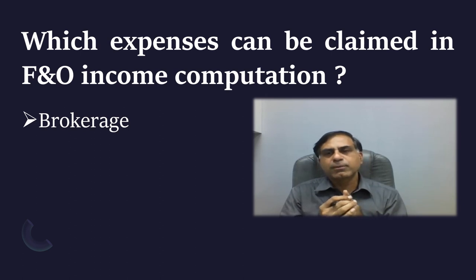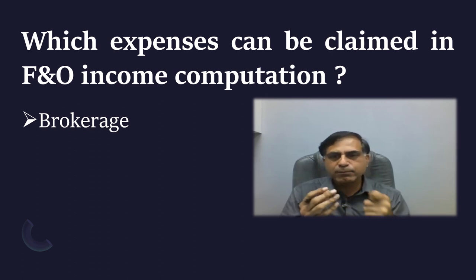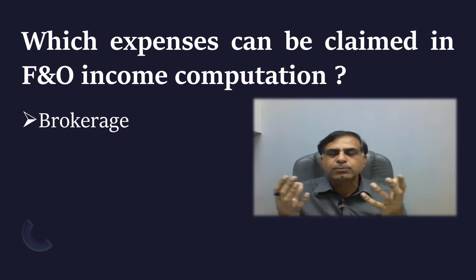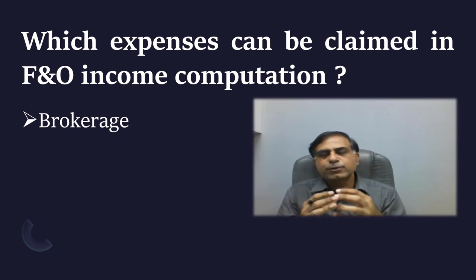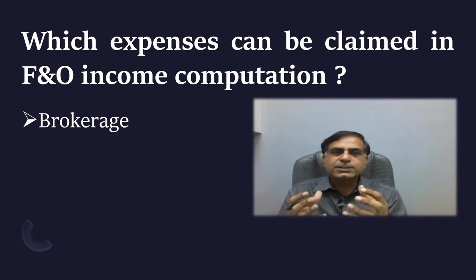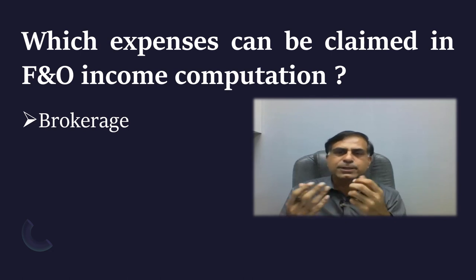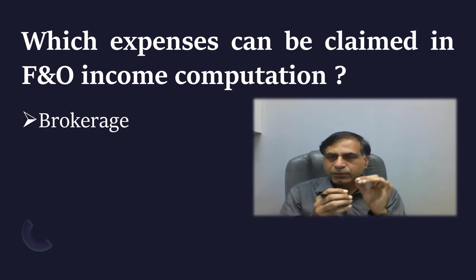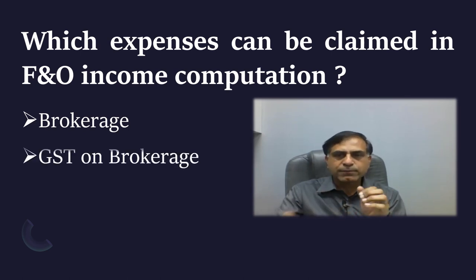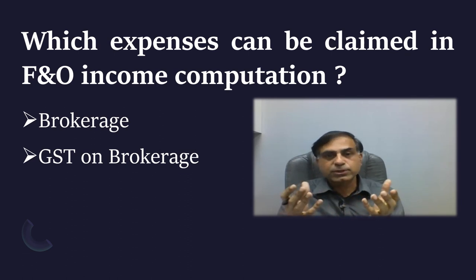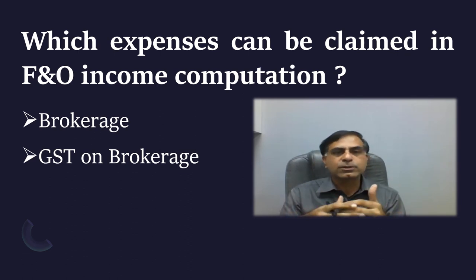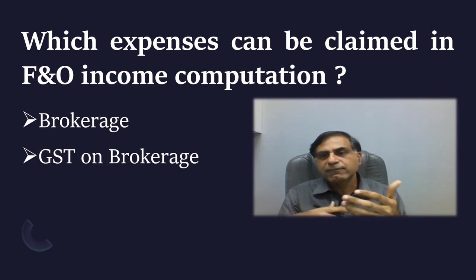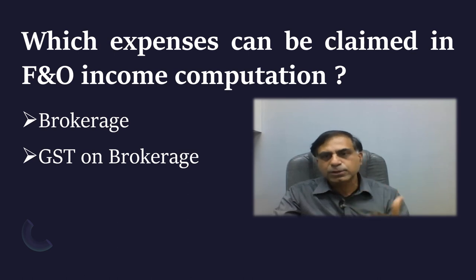The first one, which is very common, is brokerage. If you incur any brokerage in conducting your F&O transactions, whosoever your broker is, they must be charging you certain brokerage on a per transaction basis — maybe it is 1 rupee or 100 rupees. That brokerage is simply an expenditure which is duly eligible for claiming against your F&O income. In addition to the brokerage, the securities transaction company is likely also applying GST on that brokerage, and that GST is also an allowable expenditure.